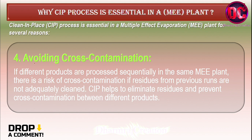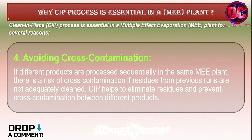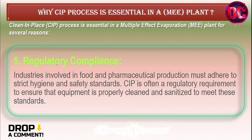Fourth, avoiding cross contamination: if different products are processed sequentially in the same ME plant, there is a risk of cross contamination if residues from previous runs are not adequately cleaned. CIP helps to eliminate residues and prevent cross contamination between different products.